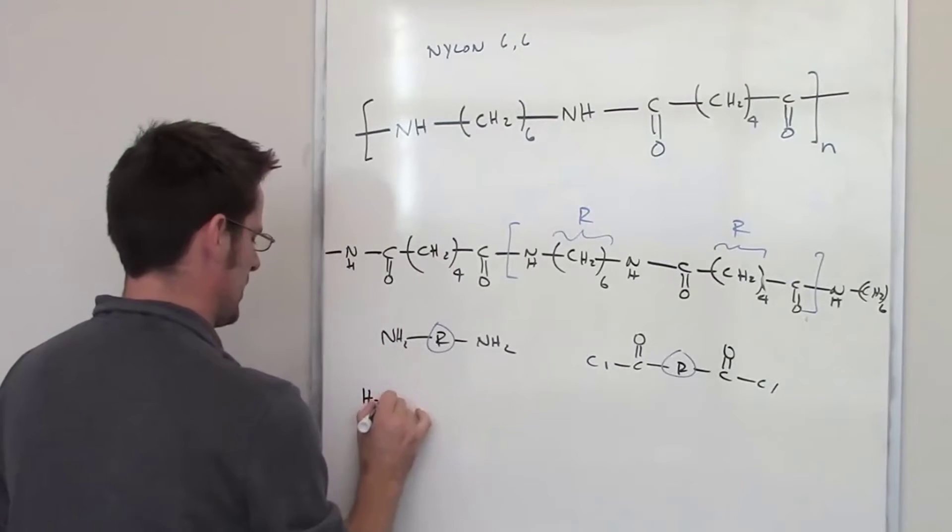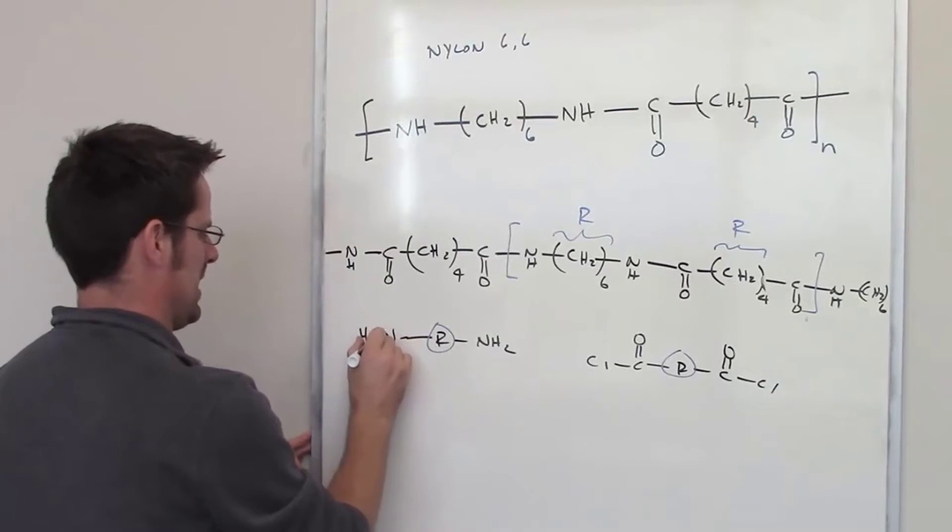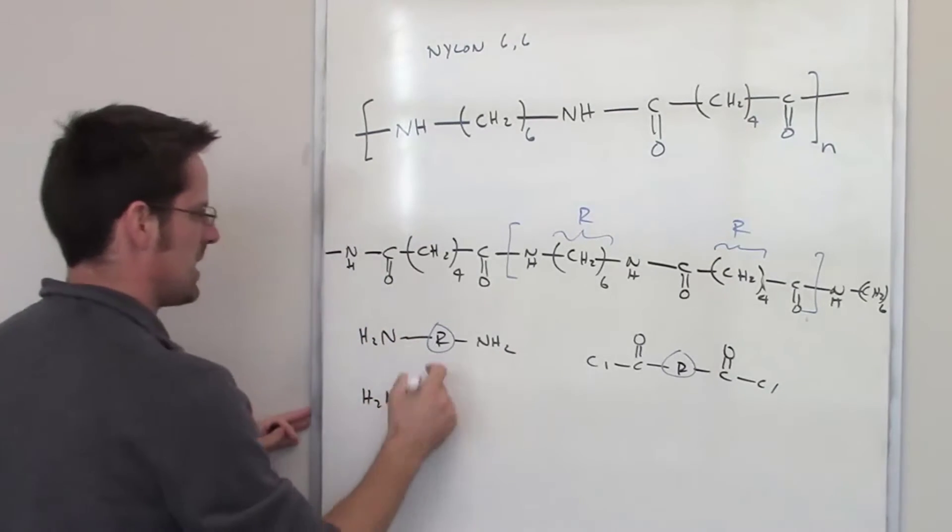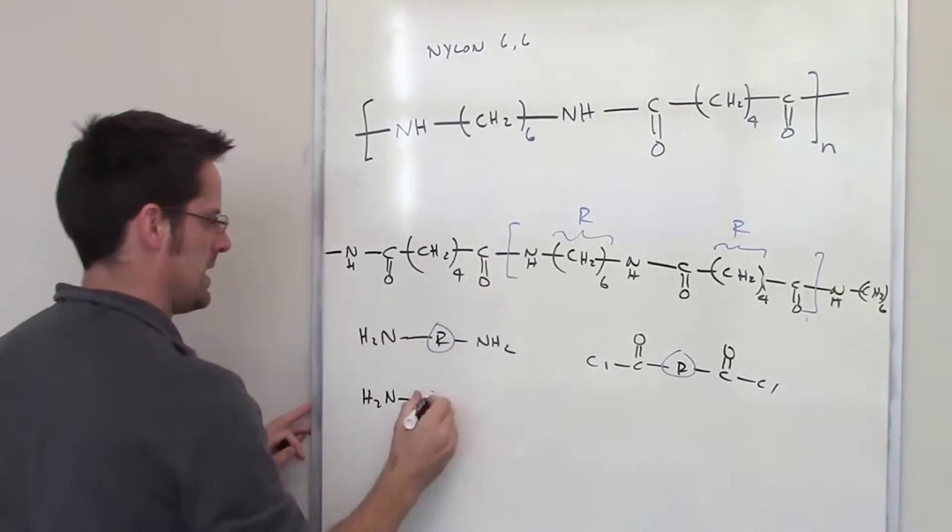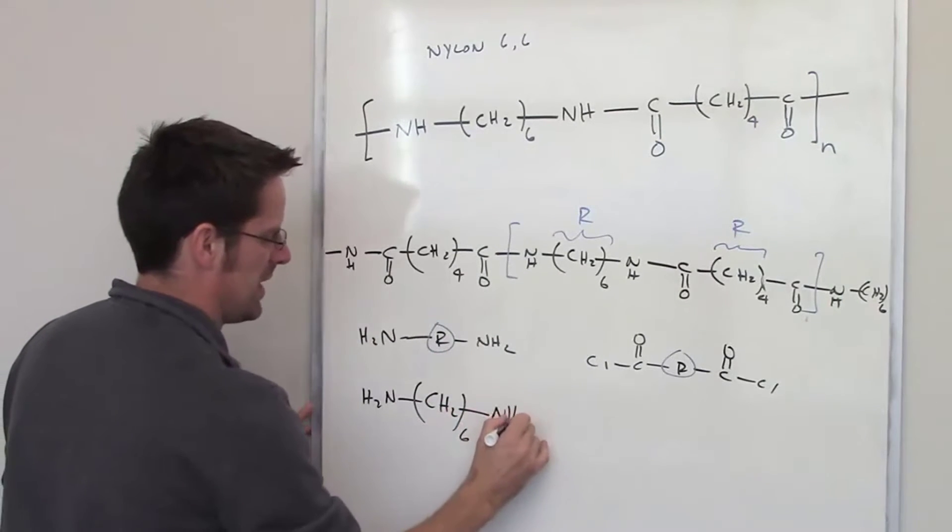So, I've got my two nitrogens. I'll go ahead and write my NH2. Sorry for the confusion. I can write the H2 on the other side, and instead of writing an R here, for this specific example, I'm going to write CH2, and there are six of them, and then I've got another NH2 there.